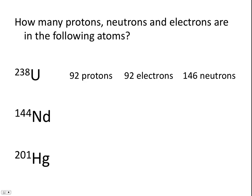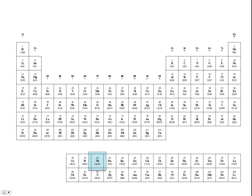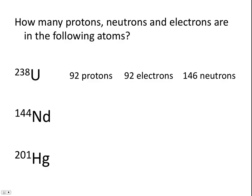Moving to our second example, we can find the symbol for neodymium on the periodic table and see that the atomic number for neodymium is 60. That means all atoms of neodymium have 60 protons. In a neutral atom, the number of protons equals the number of electrons, so neodymium also has 60 electrons. The number of neutrons equals the mass number, 144, minus the atomic number, 60, so this isotope of neodymium has 84 neutrons.